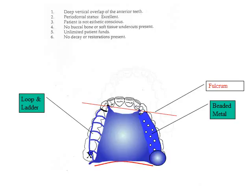Retention, if mesial, may be provided with wrought wire. If distal, a modified clasp may be used. The modified clasp is advantageous in this case. In general, retention placed adjacent to the edentulous area is more efficient, and in this case provides some indirect retention.